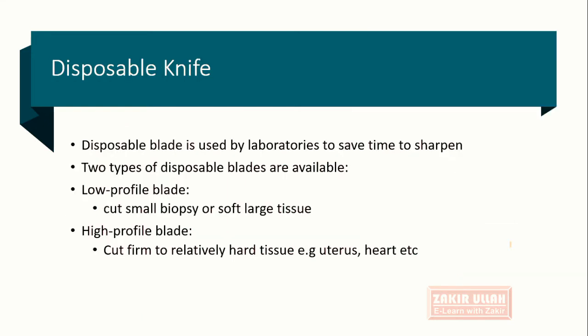Knives can be either disposable or reusable. Disposable blades are used in labs to save the time spent on sharpening. Two types of disposable blades are used: the low profile blade and the high profile blade. The low profile blade is used for cutting small biopsies or soft tissues, while the high profile blade is used for cutting firm to hard tissues such as the uterus, heart, and cartilage.